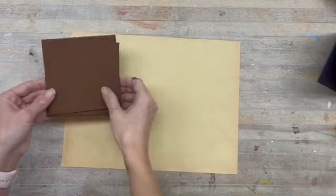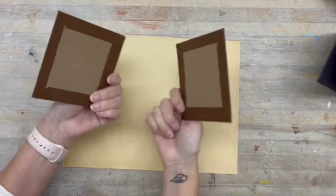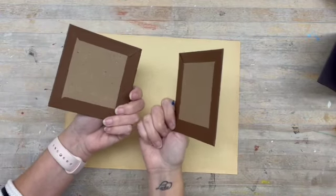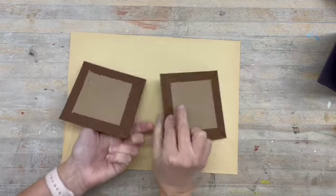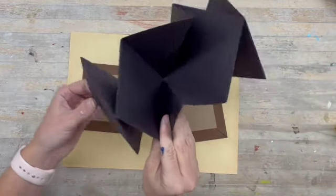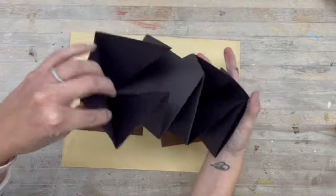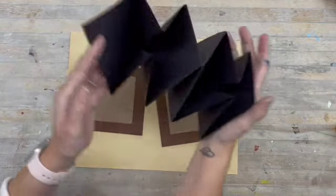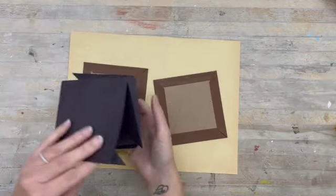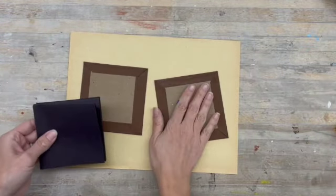Once you have your front and back covers wrapped with origami paper, and you have your three black papers folded and glued together so that they accordion, now it's time to put your book together.